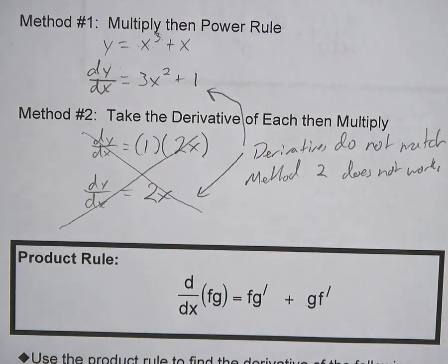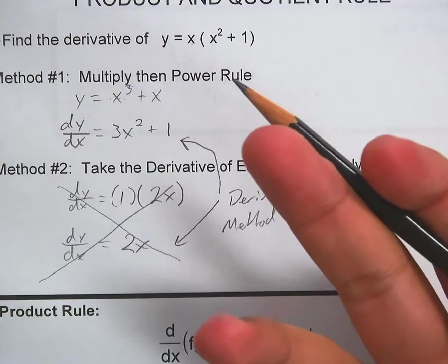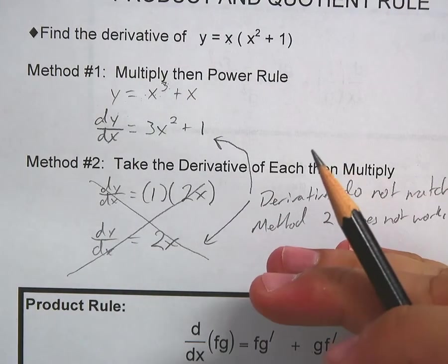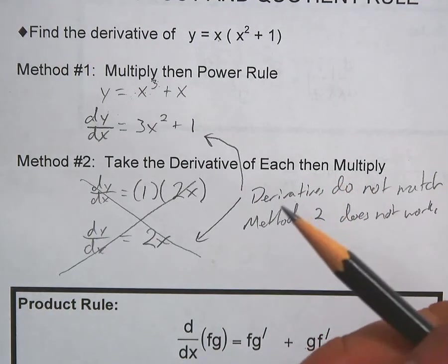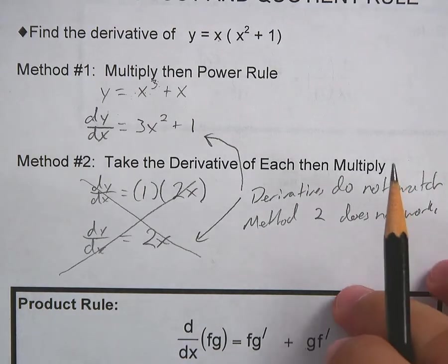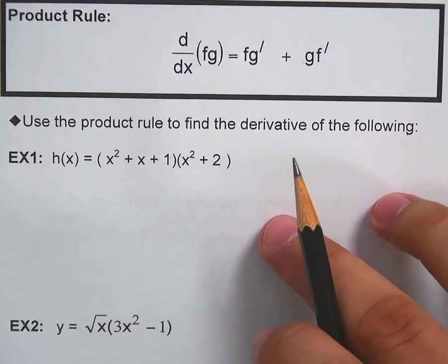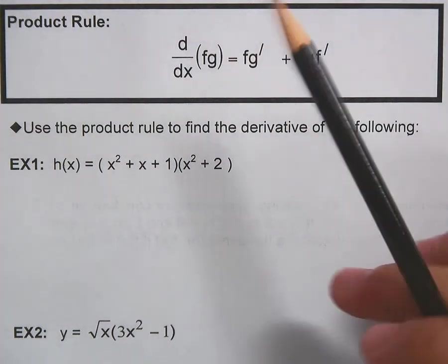So here's the problem: when you're multiplying two functions together, like x and x² + 1, some functions are easy to handle by just distributing and applying the power rule. But there's got to be a way to work this so that when the functions are complicated enough, you don't have to distribute. That's why the product rule was developed — it's what you use when you're trying to take a derivative of two functions being multiplied together.